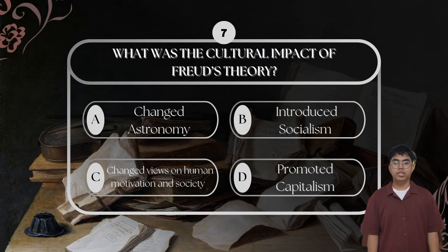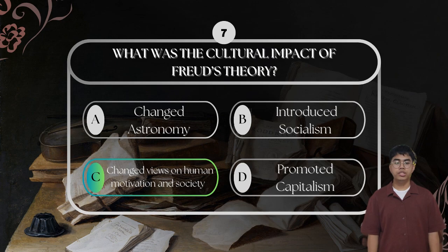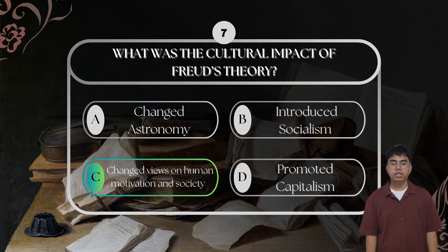For question number seven: what was the cultural impact of Freud's theory? The correct answer is that it changed views on human motivation in society. Freud's theory challenged the belief that humans act purely out of logic or morality. Instead, he showed that unconscious desires, childhood experiences, and inner conflicts shaped human behavior. This had a major impact on art, literature, and how society viewed mental health.